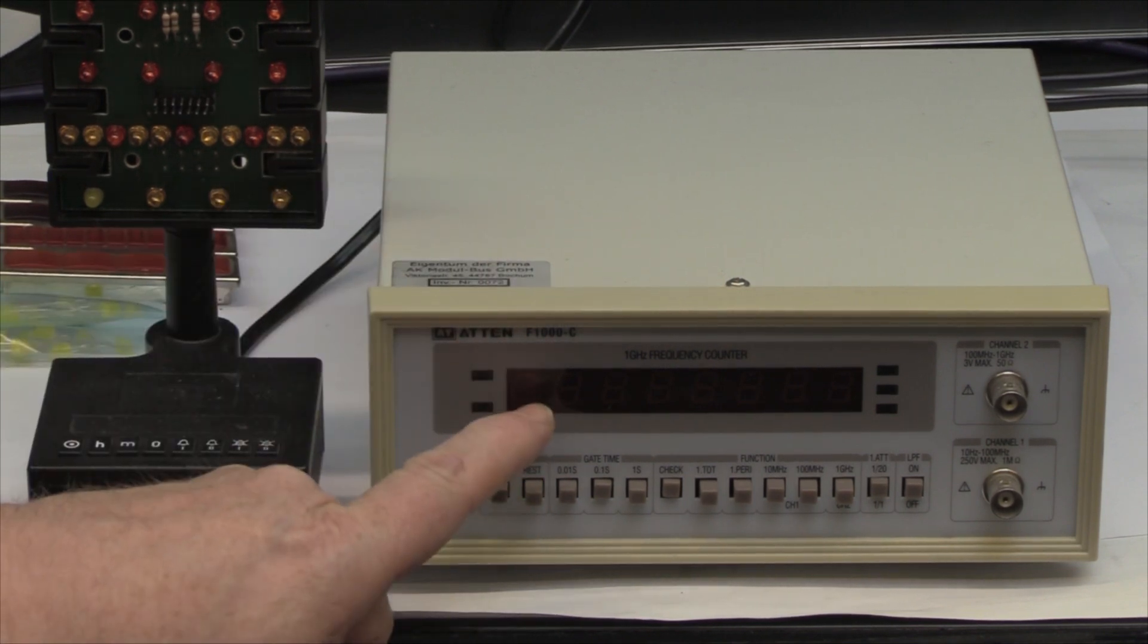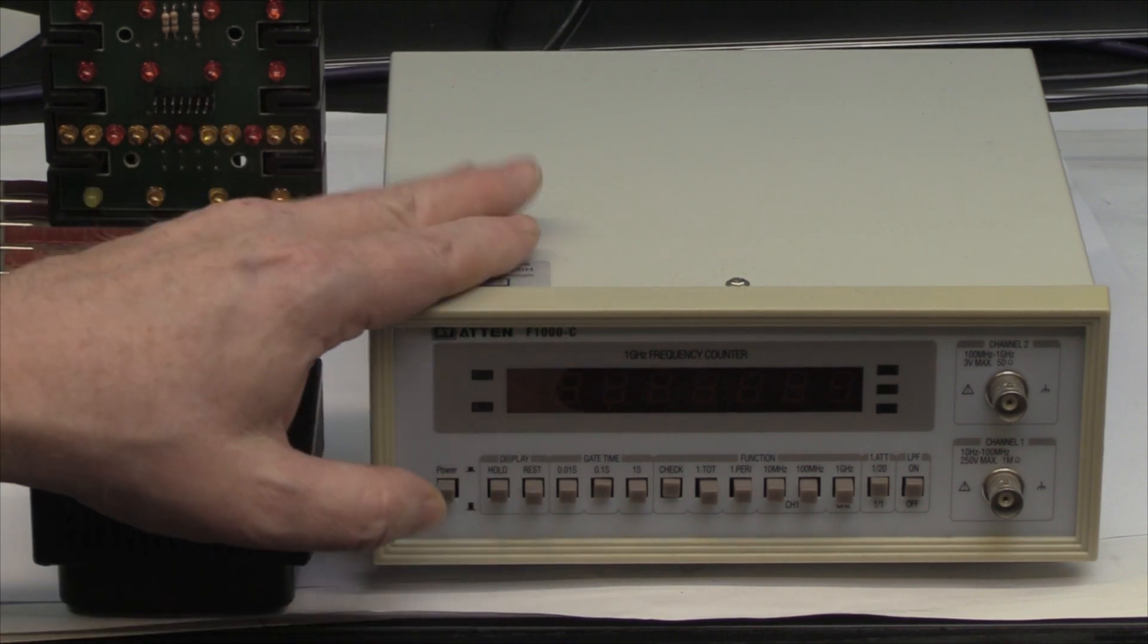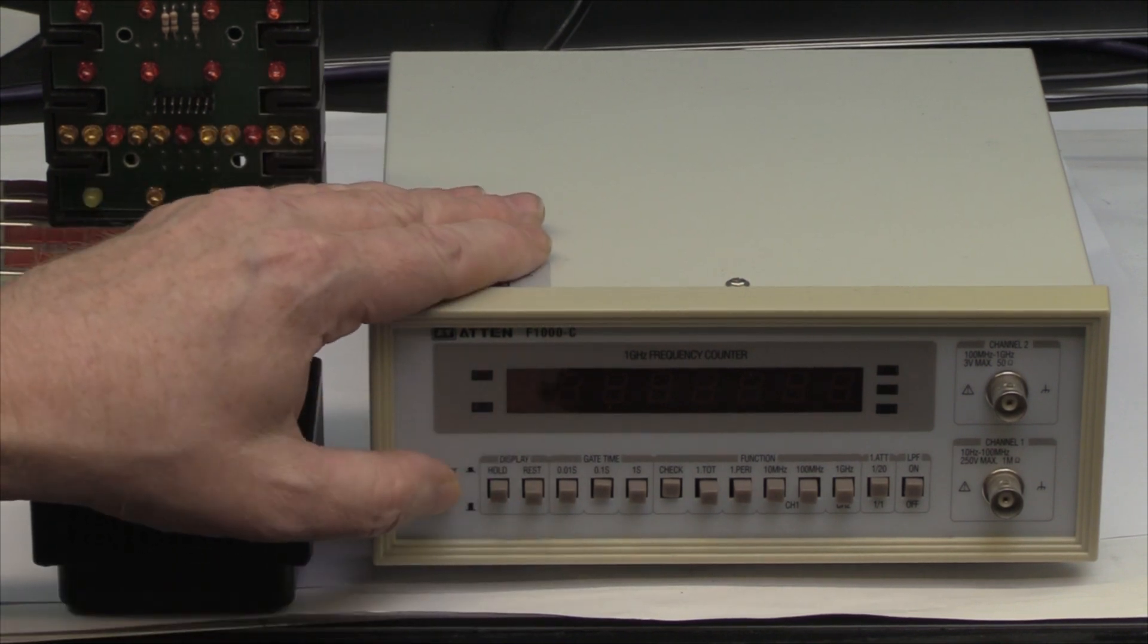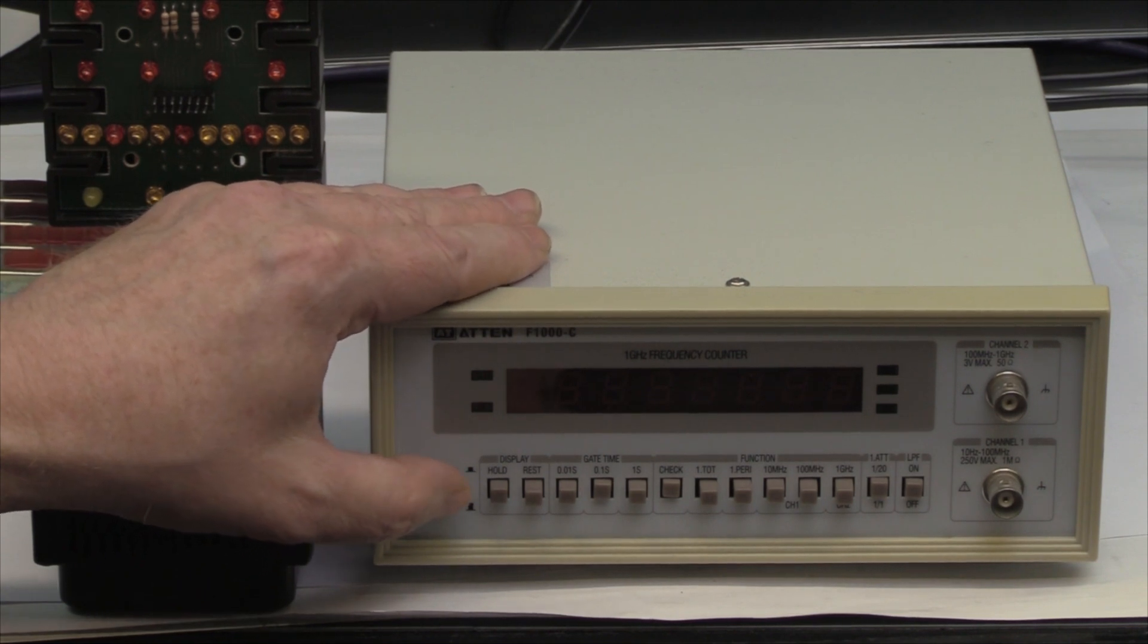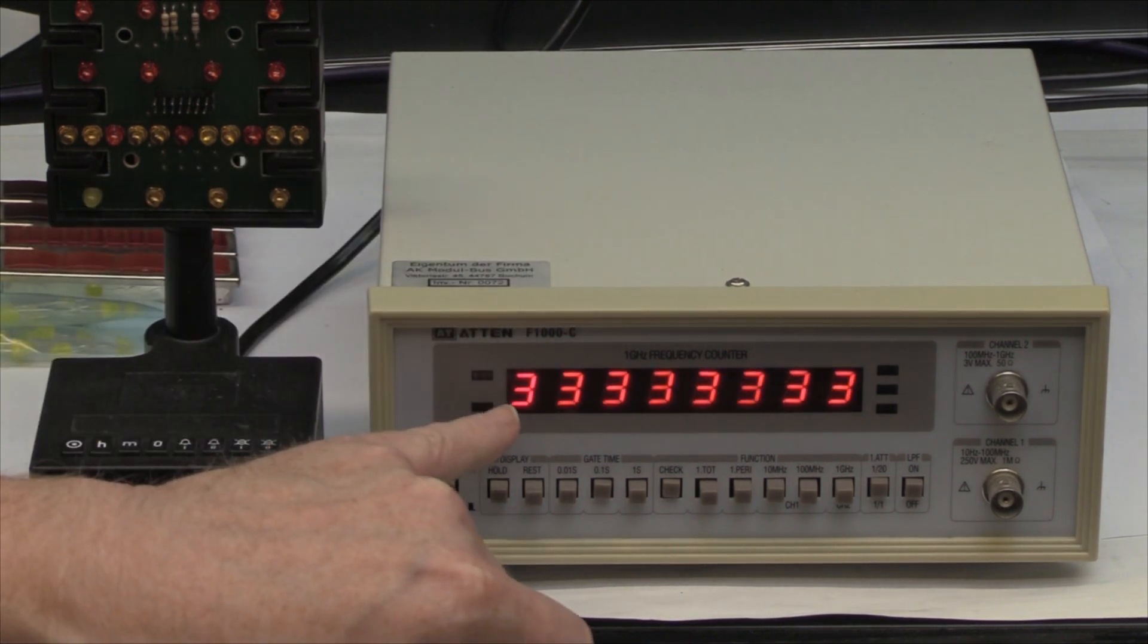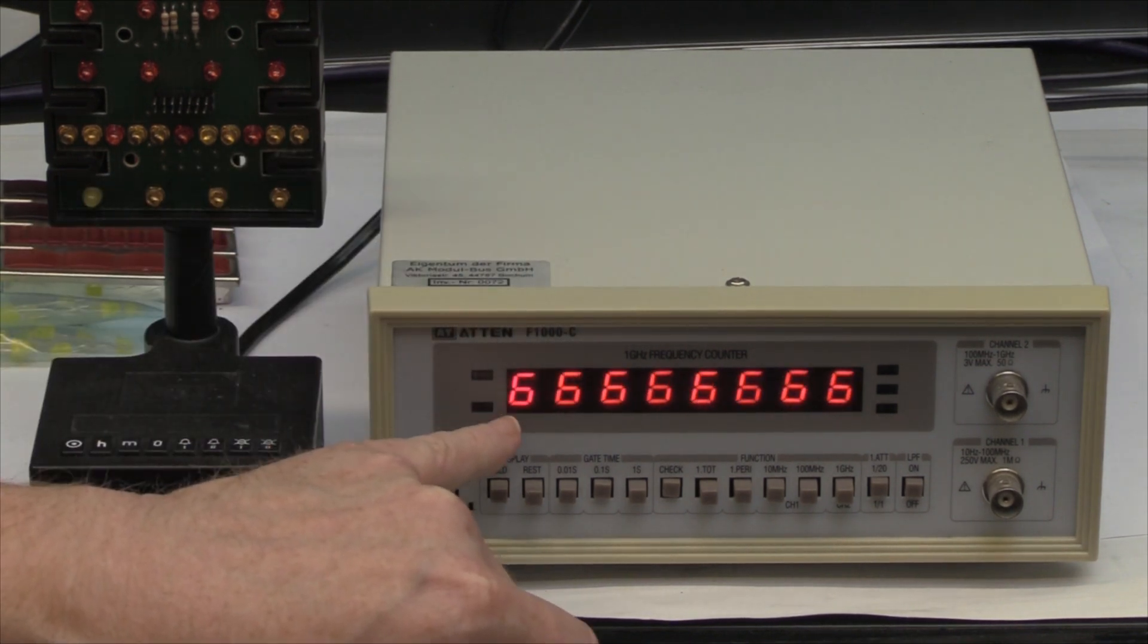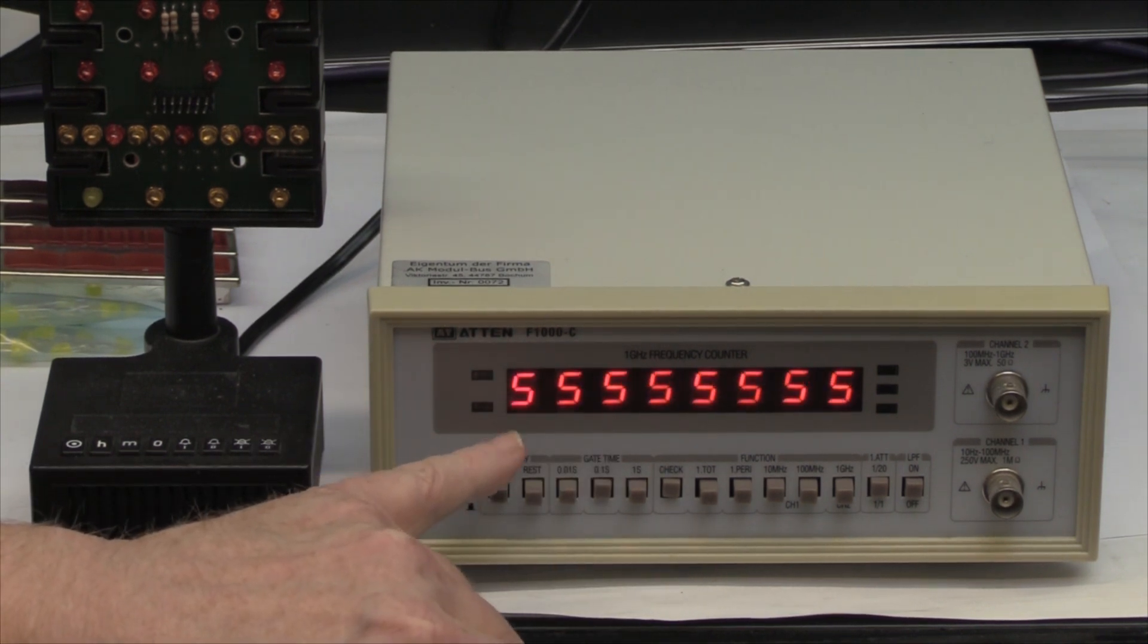One example was this frequency counter where one segment had broken. I promised to show you the result after finding a suitable replacement. You can see now all segments are absolutely the same brightness. The replacement was perfect.